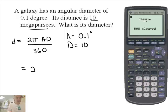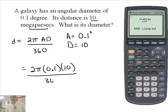So it's 10. So this will be equal to 2 times π times A. A is 0.1 times the distance, which is 10, divided by 360.